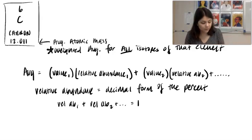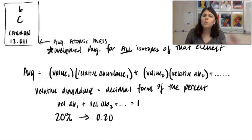And so if we talk about the relative abundance, I'm at the decimal form. So for example, 20%. The relative abundance of that is 0.20.